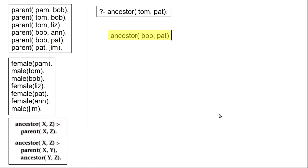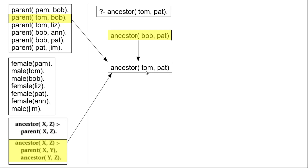Our original goal is to satisfy ancestor(tom, pat). In the process we have derived the new fact ancestor(bob, pat). We also have another fact in the program which says that Tom is the parent of Bob, and a rule which says that if X is the parent of Y and Y is the ancestor of Z then X is the ancestor of Z. By combining this fact, this derived fact, and this rule, we can say that Tom is the ancestor of Pat — because Tom is the parent of Bob and Bob is the ancestor of Pat.